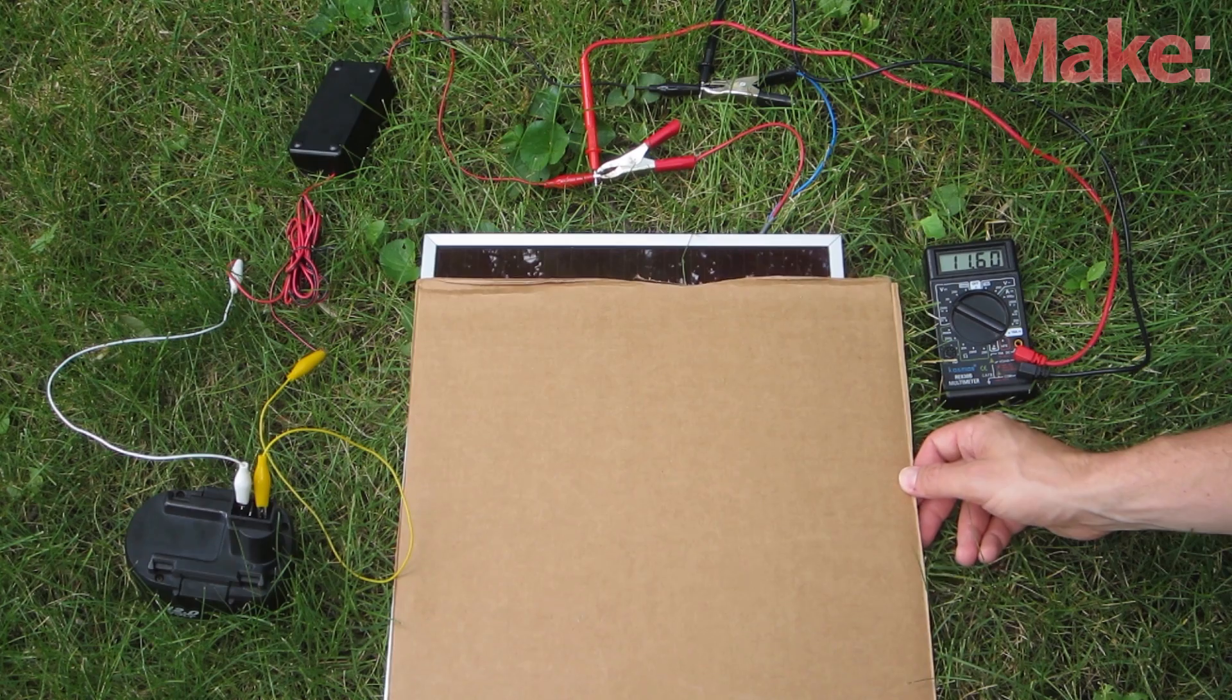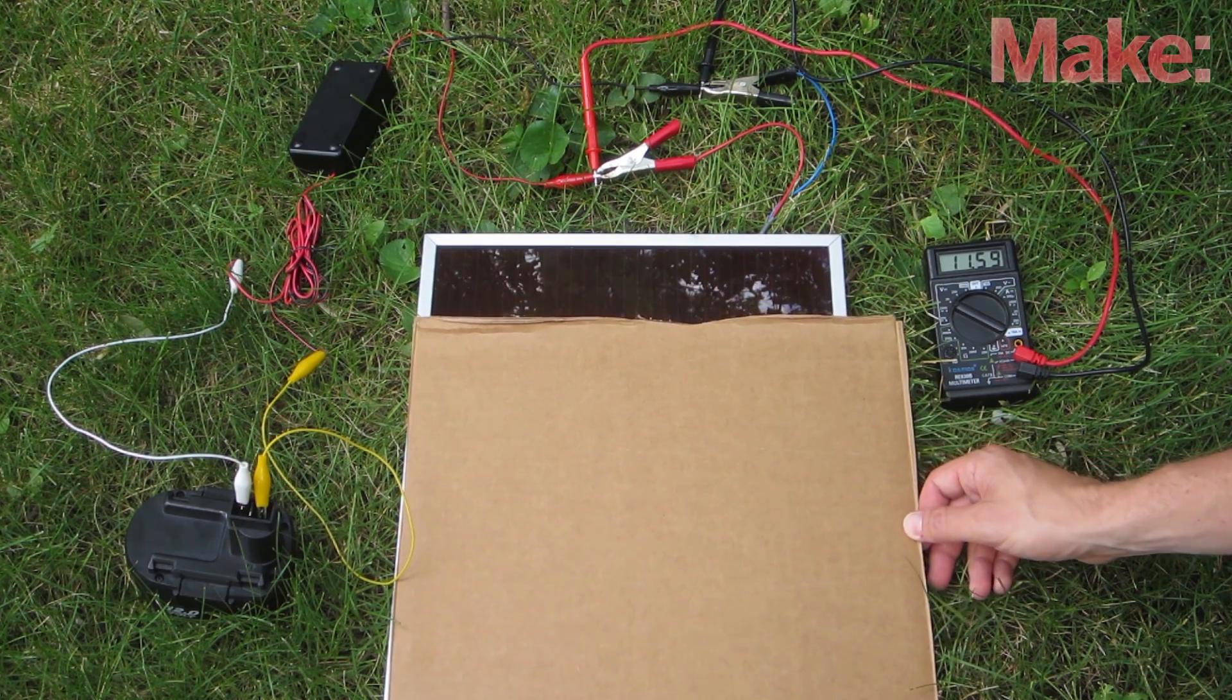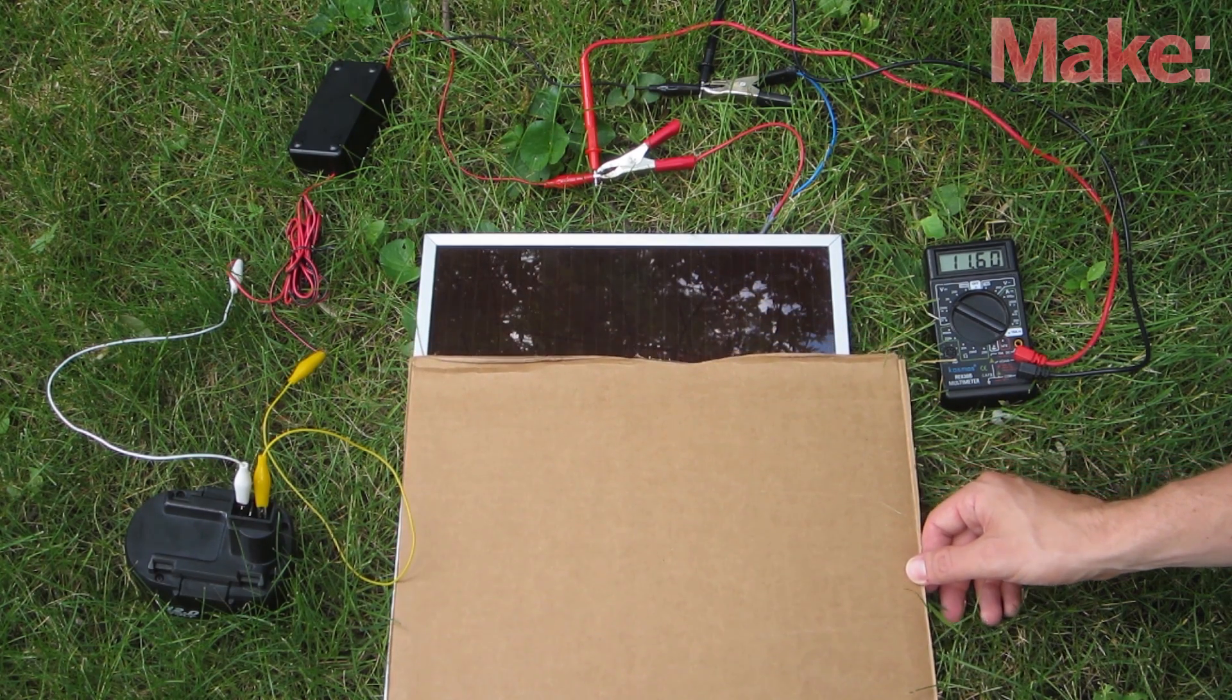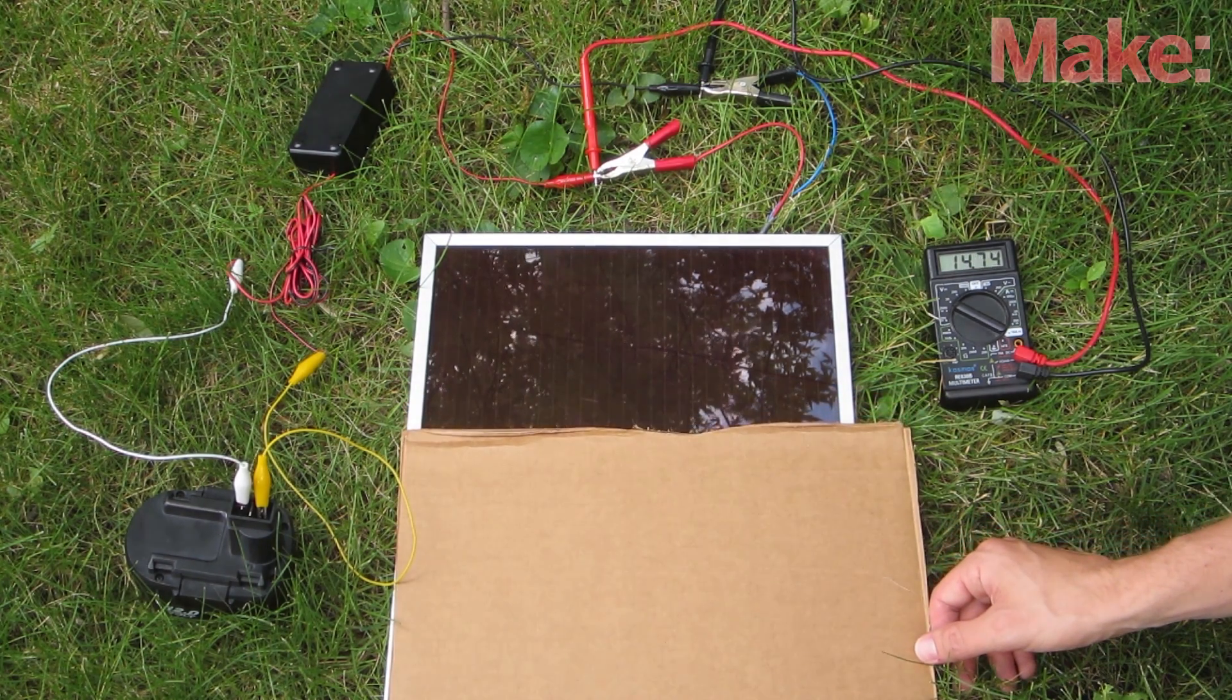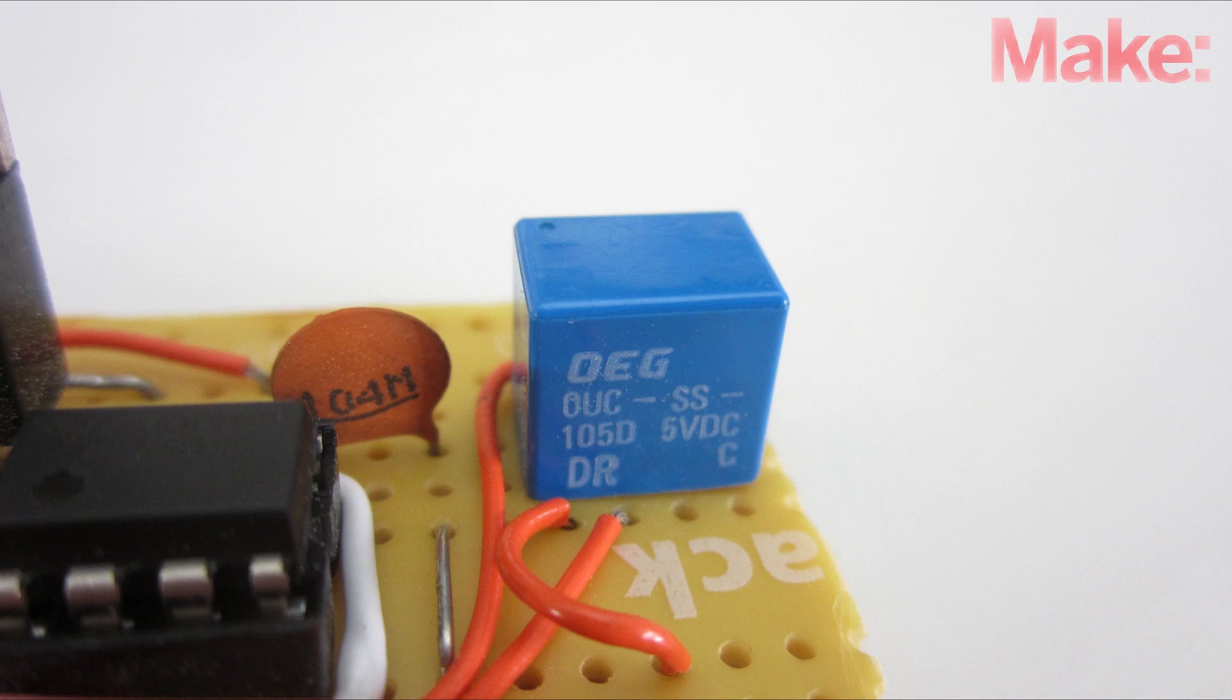Start by covering up the solar panel. Then slowly uncover it. As more light hits the panel, the output voltage will go up. When the voltage reaches 14.4 volts, you should hear a click from the relay activating.